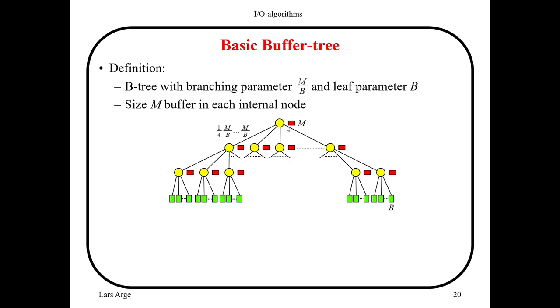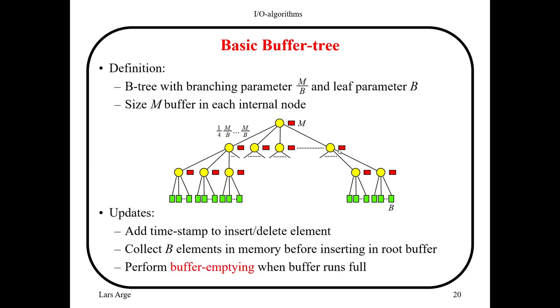And again, for every node, the buffer is written on the disk somewhere with the node itself. So just to make sure that we understand how the structure looks like, these nodes are stored on the disk. So this entire structure is stored on the disk. For every node, we also have a location on the disk where it stores its buffer.